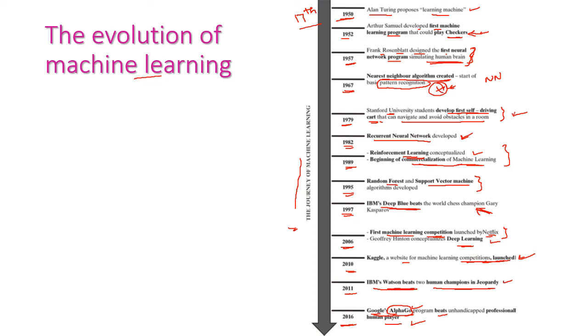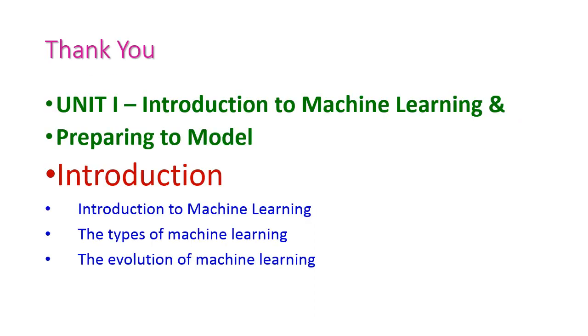So far we have seen the introduction to machine learning. In this class we have seen what is machine learning, what are the different types of machine learning—that is, four different types of machine learning: supervised, unsupervised, semi-supervised, and reinforcement learning. After that we have seen the evolution of machine learning. This is only the introduction class. In the forthcoming class we will see somewhat detail about all the machine learning topics. For more information, please go through the textbook. Thank you.